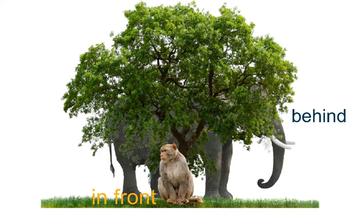Looking at this picture of the tree here, we have some animals that you can see. Now if we look at the monkey, we can see that the monkey is in front of the tree, and the elephant is behind the tree. Those are the two words that we will be focusing on today, using our 3D shapes.